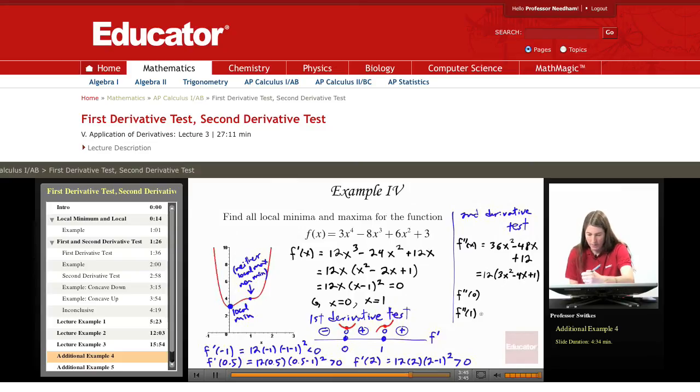At 0, we get 12, which is positive. And we have a concave up situation indicating our local minimum like we expected.